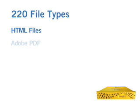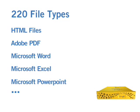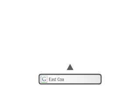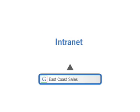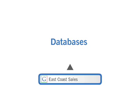The Search Appliance can index more than 220 file types, and you can point the appliance at file shares on your internal network. You can search all of the files and information on your intranet and portals. You can even search all of the records within your databases, including Oracle, SQL Server, MySQL, DB2, and Sybase.